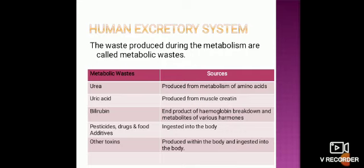Urea is produced from the metabolism of amino acids, and uric acid is produced from muscle creatine. Bilirubin is a metabolic waste whose source is the end product of hemoglobin breakdown and various hormones. The breakdown of red blood cells produces bilirubin as a metabolic waste product.